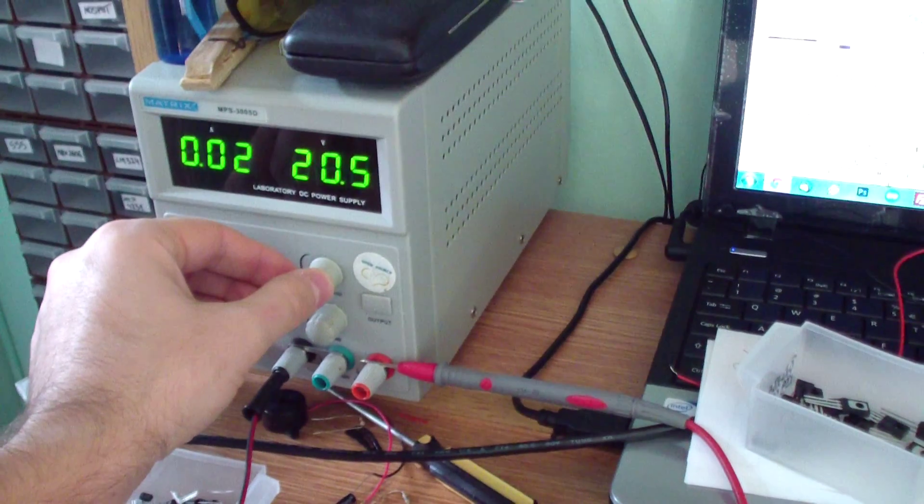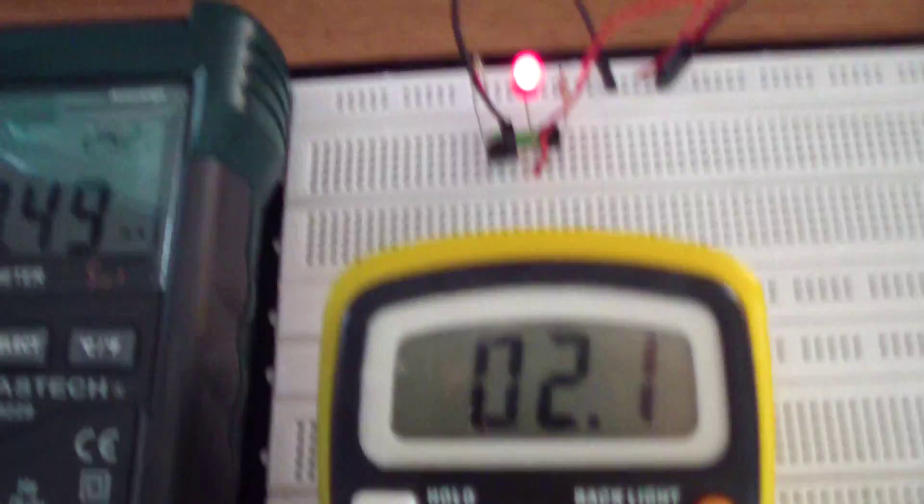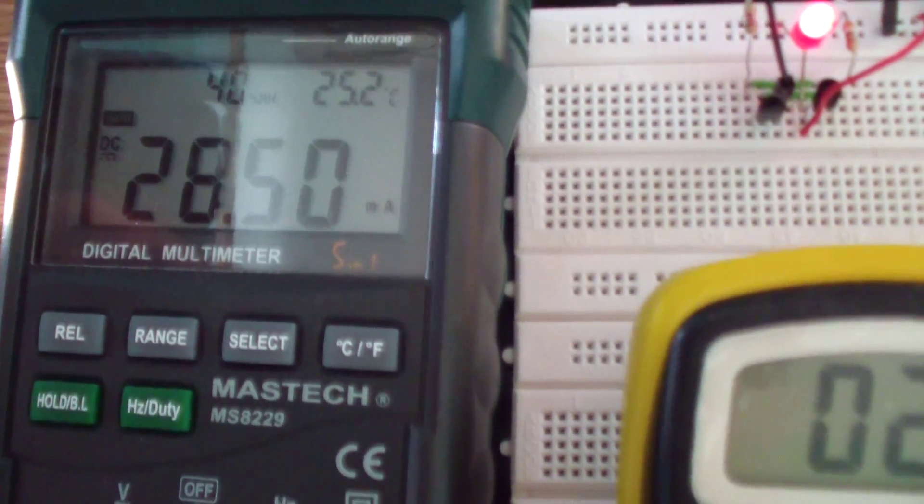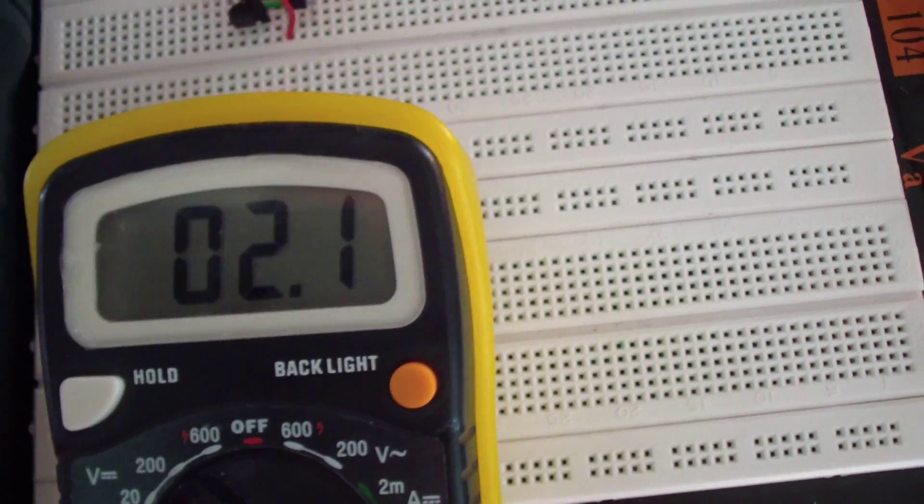Now I've increased to the maximum of 24 volts. The current consumption increased to almost 29 milliamps, and the voltage on the LED is 2.1 volts.